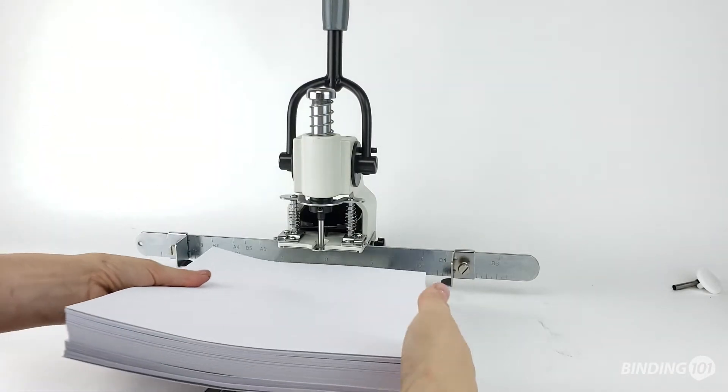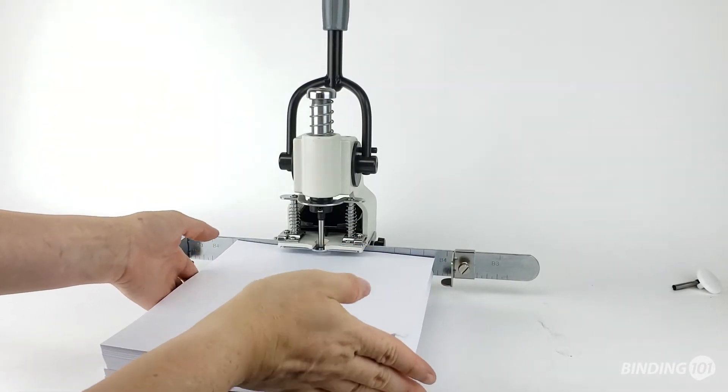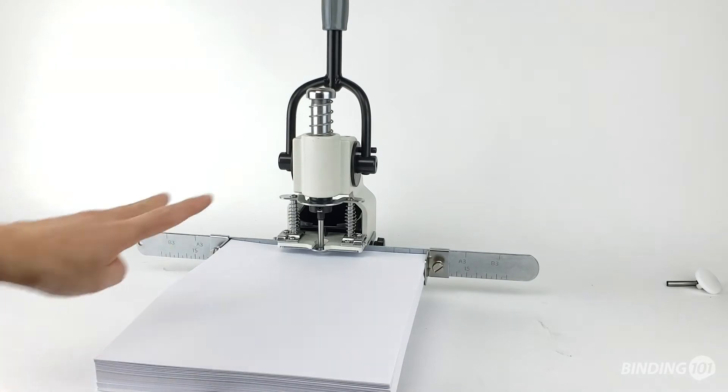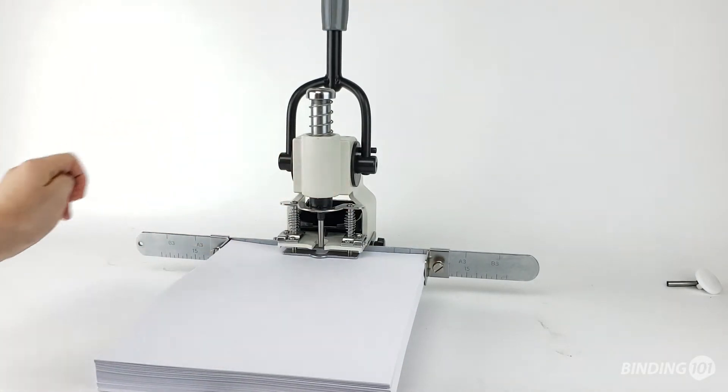Now place your stack of paper up to about 1 inch thick on the table up against the back gauge, and then press down on the paper clamp.